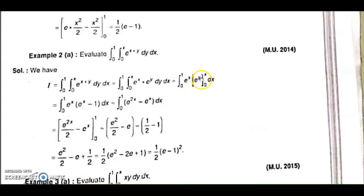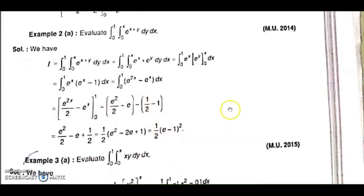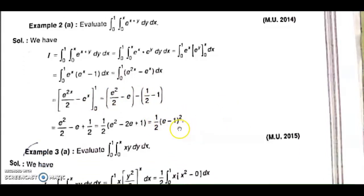For the upper limit, y is replaced by x, giving e^x. For the lower limit, y is replaced by 0, giving e^0 which is 1. So we get upper limit minus lower limit. Now it is simplified — e^x is taken inside, giving the integral from 0 to 1 as only a function of x dx. Y is completely eliminated, and it is easy as a single integral.